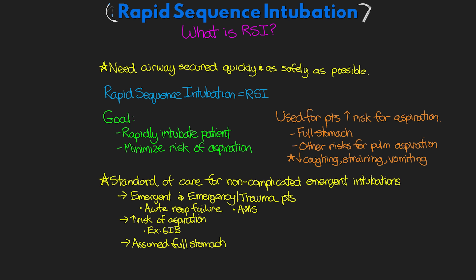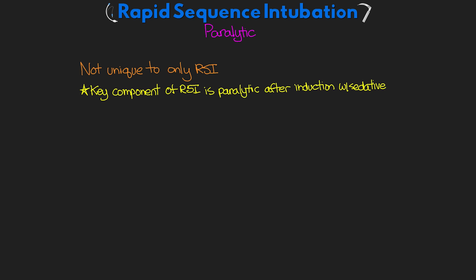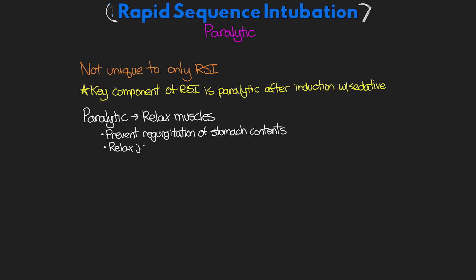RSI differs from regular intubation in a couple of key ways. One key component of RSI is the use of a paralytic agent after induction with a sedative. Unconscious patients can often be safely intubated without a paralytic, but the use of a paralytic serves to relax muscles in the patient to help prevent regurgitation of stomach contents as well as relaxing the jaw and neck muscles, really aiding in the intubation attempt. Succinylcholine is typically the gold standard for RSI as it has a quick duration of action — about five to seven minutes.